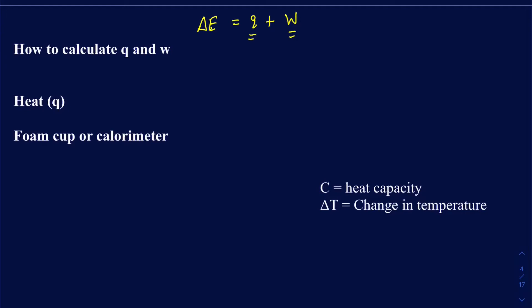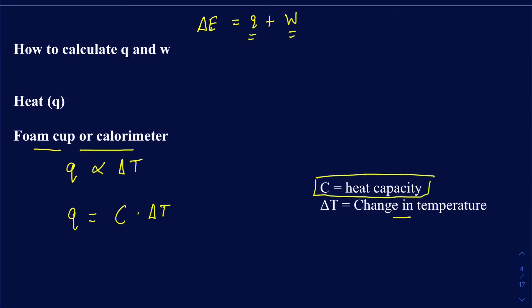Let's take an example of a foam cup calorimeter, something you use in the labs to determine the heat of neutralization or how much energy a hot metal releases into cooler water. When you're losing or gaining energy through the foam cup, it's dependent on the change in temperature. So Q is directly related to delta T, and Q becomes C times delta T, where C is the heat capacity for that particular calorimeter.